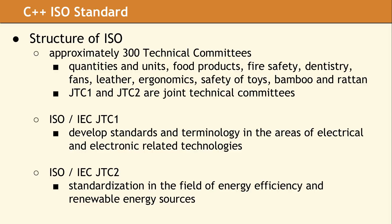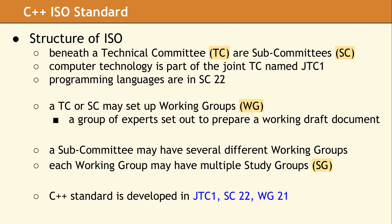Before JTC1 was formed, ISO Technical Committee No. 97 existed to handle anything related to information processing systems. In 1987, Committee 97 was merged with the IEC Technical Committee No. 83 to form JTC1. This is now the Joint Technical Committee which deals with all electronic-related technologies. JTC1 governs the standards for all kinds of technology, including computers and software languages.